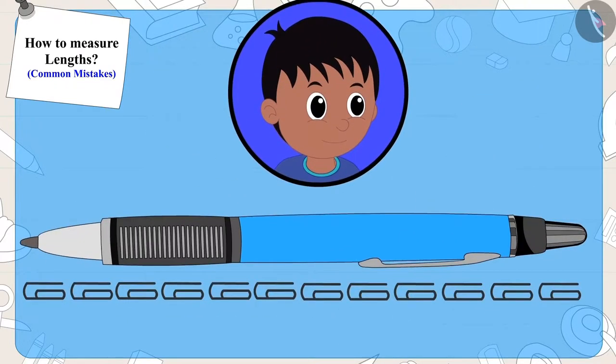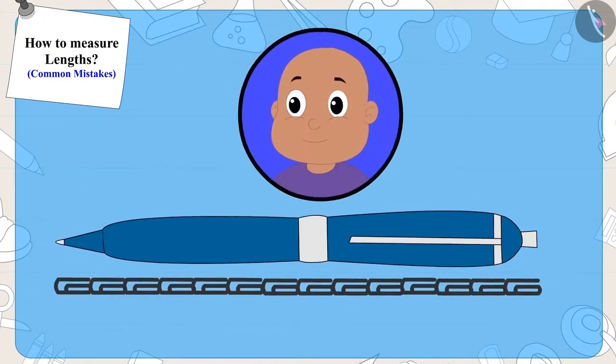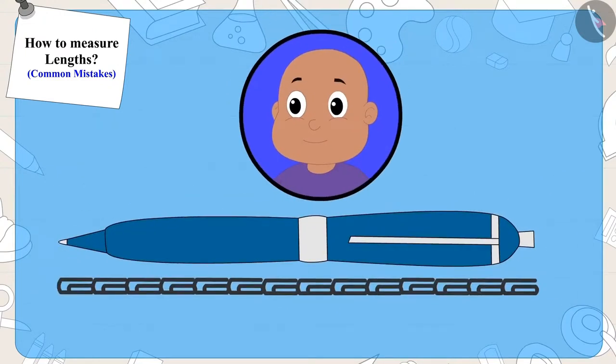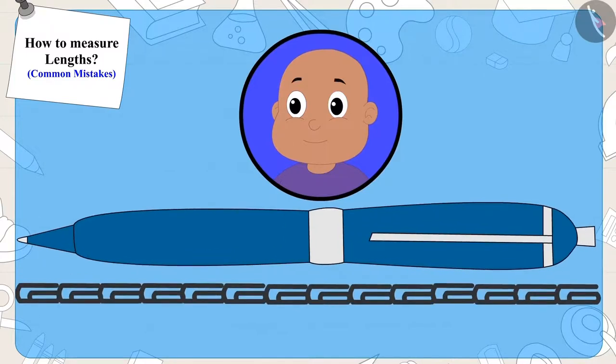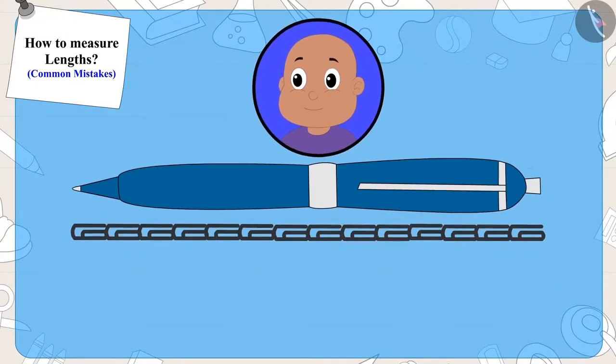Yes, while measuring the pen, Raju left a lot of space between the clips. That is why only 12 clips came in the length of Raju's pen. On the other hand, while measuring his pen, Bablu placed the clips in a straight line without leaving any space in between. That is why the length of his pen was 14 clips long.